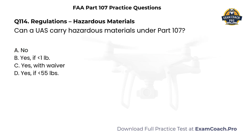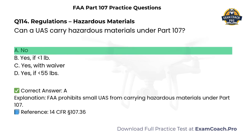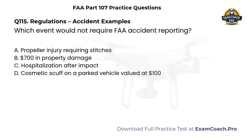Regulations. Hazardous materials. Can a UAS carry hazardous materials under Part 107? A. No. B. Yes, if less than 1 pound. C. Yes, with waiver. D. Yes, if less than 55 pounds. Correct answer: A. The FAA prohibits UAS from carrying hazardous materials under Part 107.